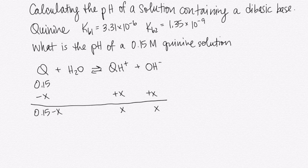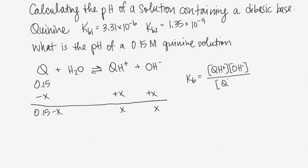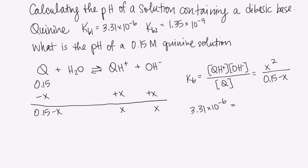So then we just write our Kb expression, which is going to be our QH+ times our OH- divided by our Q at equilibrium, which is x squared over 0.15 minus x, and this equals 3.31 times 10 to the minus 6. Because my Kb is really small, I know that my x will be small as well, so I can neglect my x here on the bottom, and I'll just say this is approximately equal to x squared over 0.15.